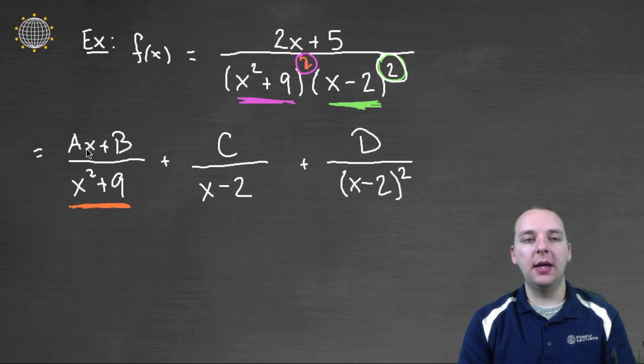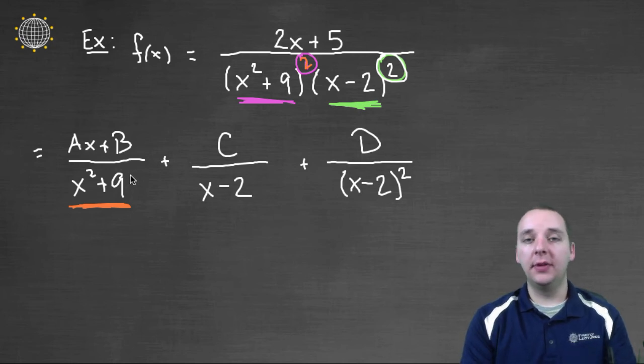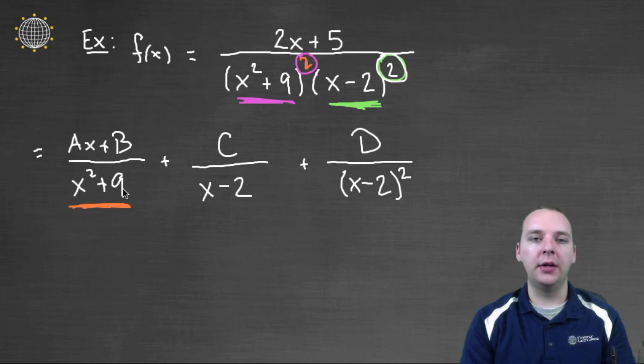And then you would just keep making up different expressions, linear expressions for the numerator, Ax plus B, and then for the next one, Cx plus D, and then Ex plus F, so on and so forth. So you have these new linear expressions in each of your numerators, okay?